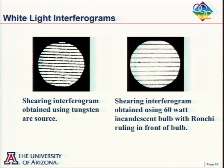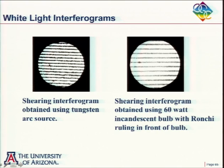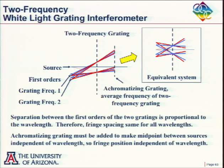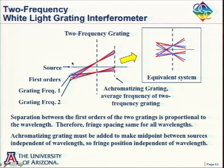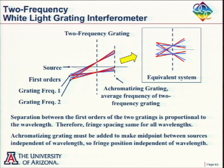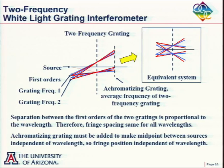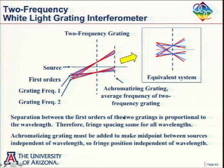This is one example of an achromatic interferometer: the fringes have the same frequency and same location independent of wavelength. If you go back in the literature, you'll see other examples of achromatic interferometers, but the most popular ones all use diffraction gratings.